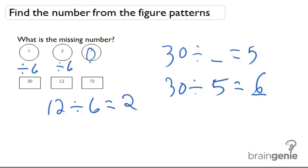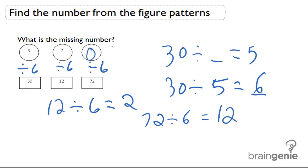So here all I have to do is divide 72 by 6. And when I do 72 divided by 6, the answer is 12. And so that is going to be the missing number — 12. And that is how you figure out figure patterns.